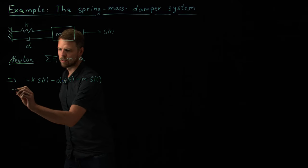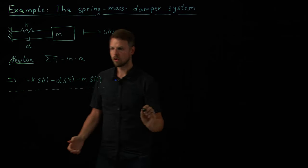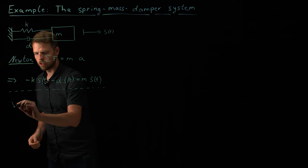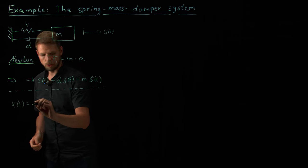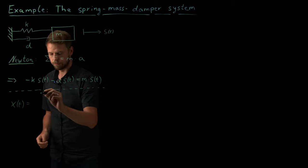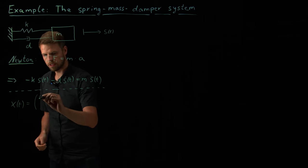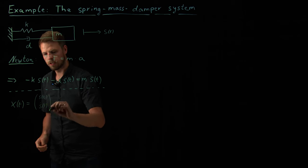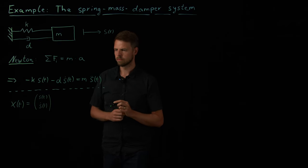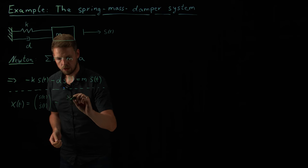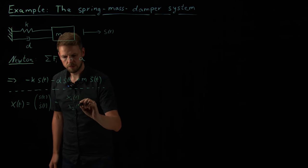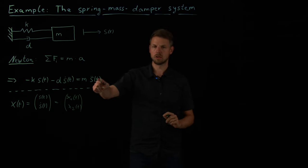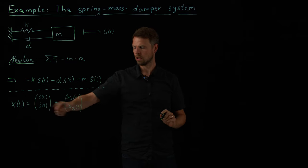So what we can do now is, we introduce new variables. So what I'm going to say is, I'm going to say that my state variable x of t is composed of the position s of t, and also the velocity s dot of t. So these are my x1 and x2 variables. So this is x1 of t and x2 of t. Okay, so we see here, now the second order ODE in one dimension becomes the first order ODE in two dimensions.